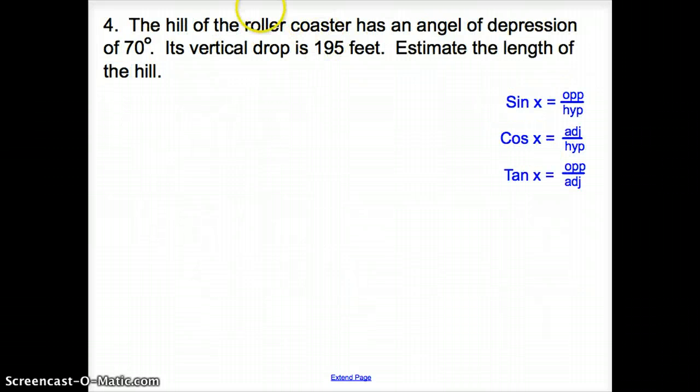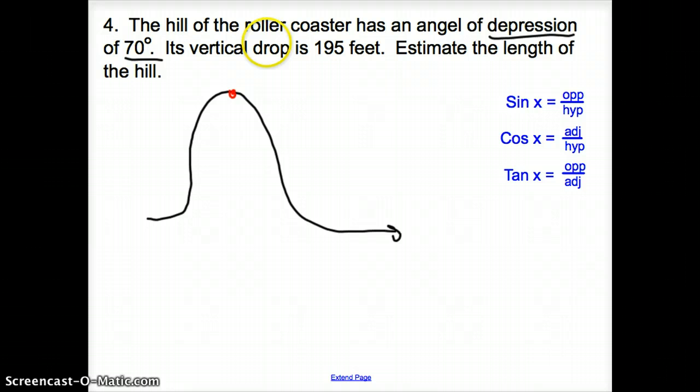Let's try another one with my beautiful artistic ability. Here with 4, the hill of a roller coaster has an angle of depression. Now we are using the angle of depression of 70 degrees. Its vertical drop is 195 feet. Estimate the length of the hill. So first things first. Let's go ahead and draw a roller coaster. So our roller coaster is going to go up and then it's going to go down just like that. So here is the hill. At the height of the hill, we are looking out of it. And it says the angle of depression is 70 degrees. So that 70 degrees is going to go from here to probably about there. And that is the 70 degrees.